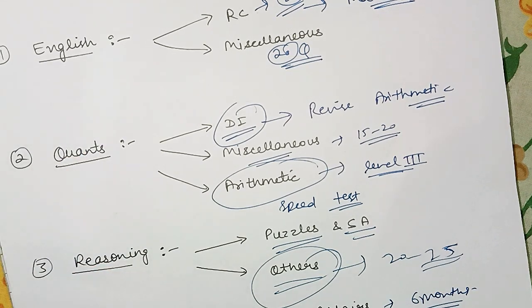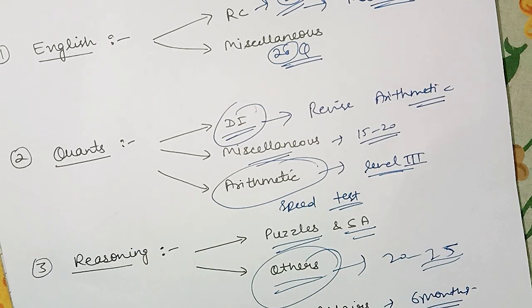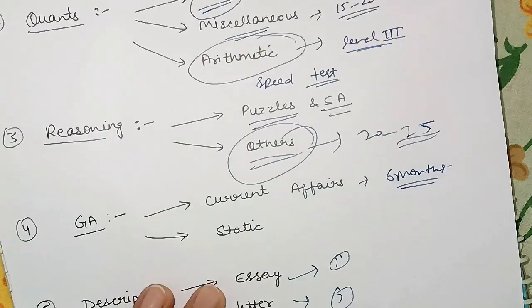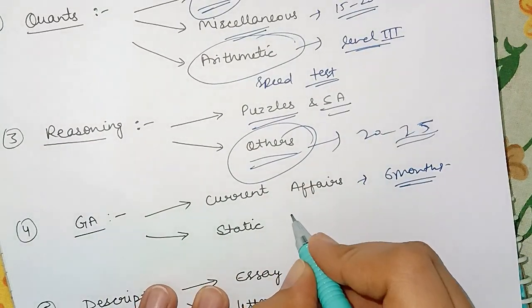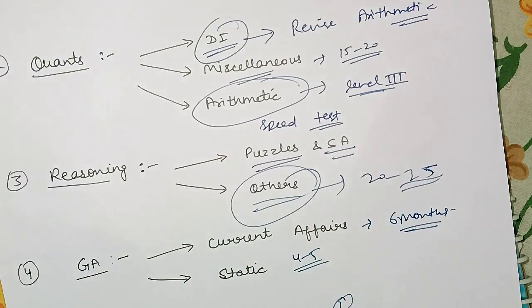And then I used to do one subject from quants or reasoning and then GA. GA, you should like if you are taking a break from studies then you can read GA because it does not take that much of effort, you just have to do the readings. You should read the previous before the examination at least four to five times because when you are reading the things again and again then you will learn them. Your mind will store the information.